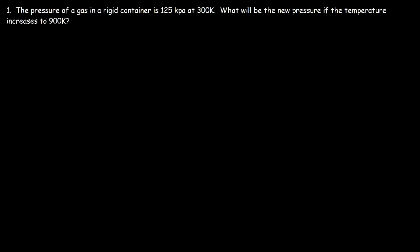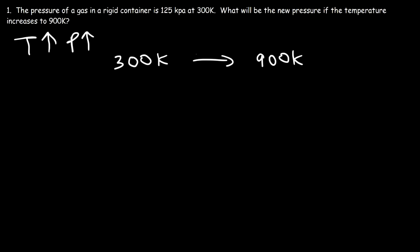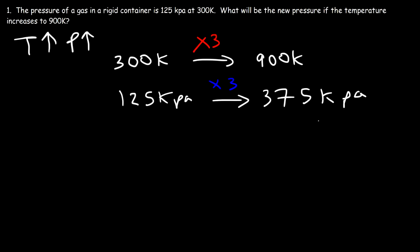Practice problem 1: The pressure of a gas in a rigid container is 125 kilopascals at 300 Kelvin. What will be the new pressure if the temperature increases to 900 Kelvin? Conceptually, since temperature and pressure are directly proportional, the temperature increases by a factor of 3 (300 × 3 = 900), so the pressure should also increase by a factor of 3: 125 × 3 = 375 kilopascals.